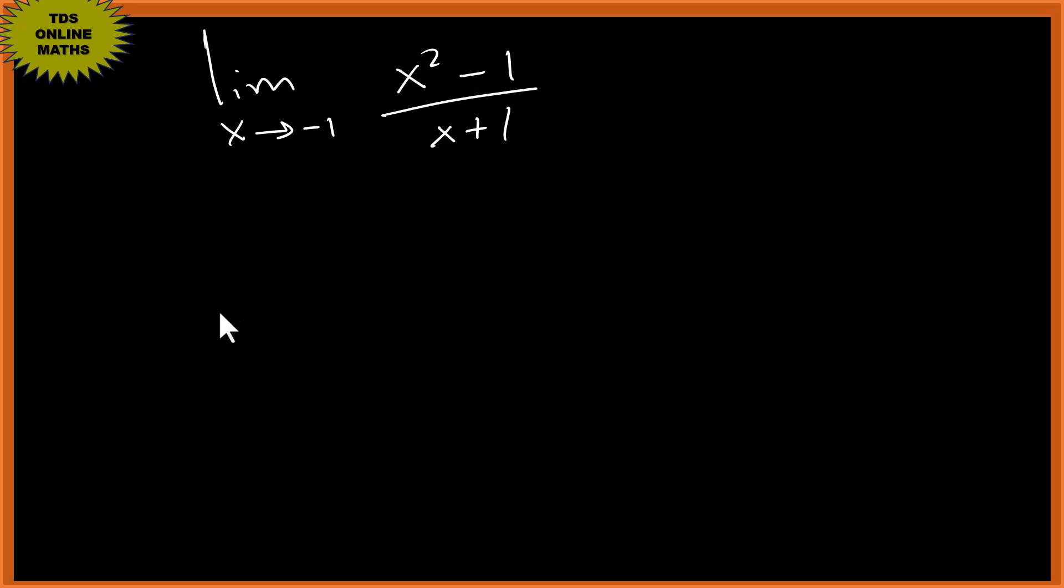You know, x squared minus one is the same as x plus one times x minus one, the difference of two squares.